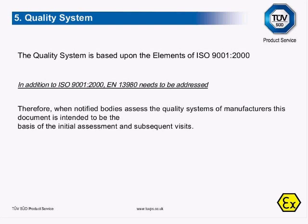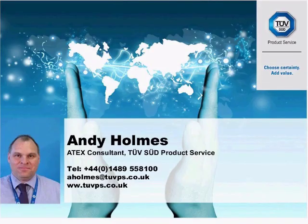Lastly, the quality system is based on the elements of ISO 9001:2000 and associated parts. In addition, ATEX also has EN 13980, which is part of the quality system. If you are looking at equipment going into Zone 0 for gases, Zone 0 and Zone 1, and Zone 20 and Zone 21 for dusts, then quality audit systems and assessments will be required. These are done on a yearly basis at the factory where the equipment is being made. And that concludes the presentation.